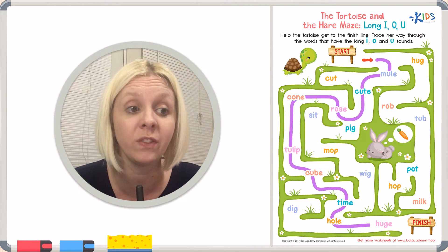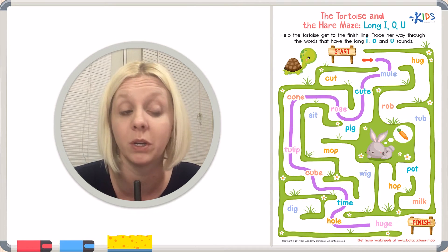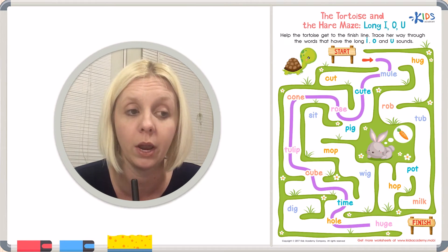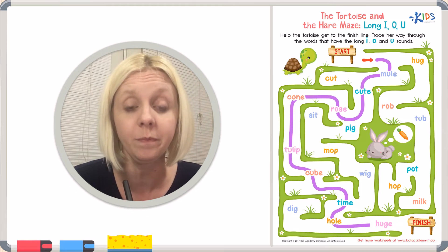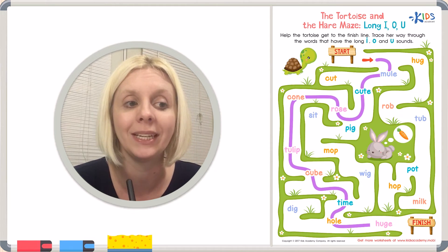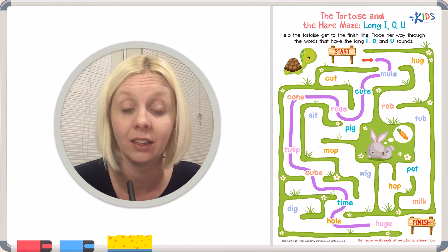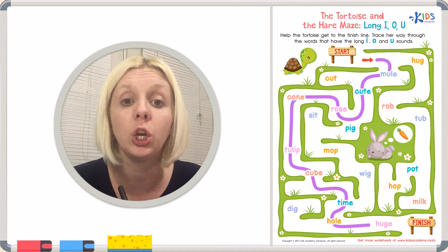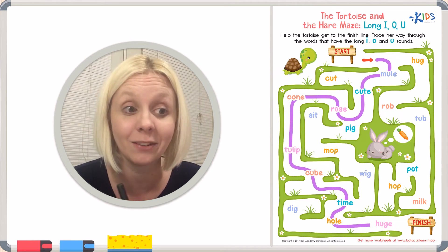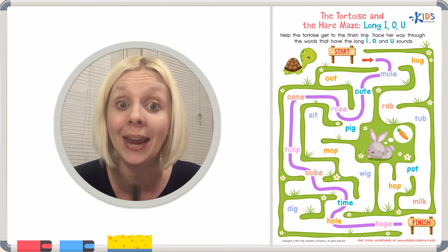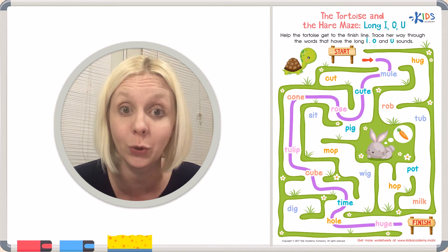But we run into a word here. Let's make sure this is the right word that we went the right way. Are you ready? This is the word huge. Please listen. Huge. Does it make the U sound? And it's got our friend the E. Let's listen one more time. Huge. Yeah, that's it. We're going the right way. So we're going to draw our line through here and we have made it to the finish line with our tortoise, didn't we?